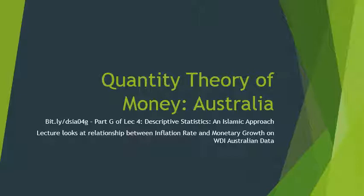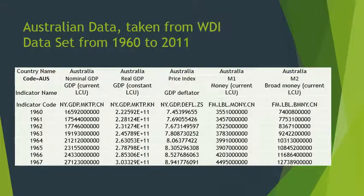In Australian data taken from the World Development Indicators (WDI), here is the data itself. There is a country code for Australia. GDP in current LCU is nominal GDP — that's the first column after the years. Then there is GDP in constant LCU (local currency units), also called real GDP. Then we have the price index, which is the GDP deflator, then M1 which is just money, and M2 which is broad money. These five series run from 1960.